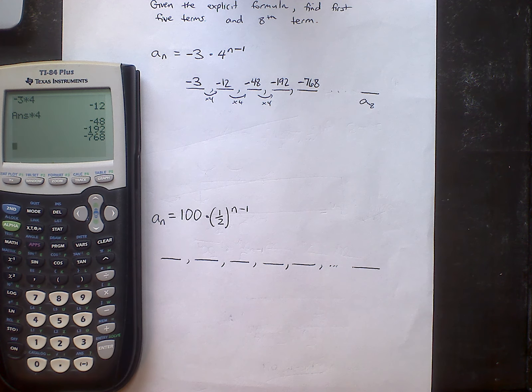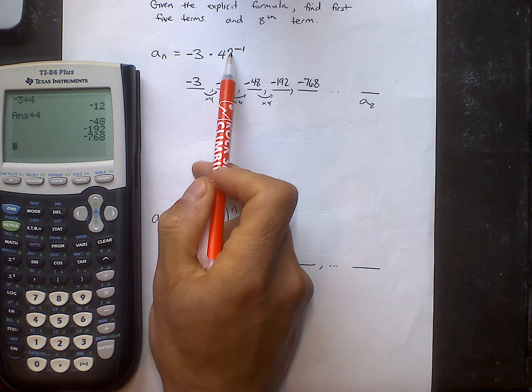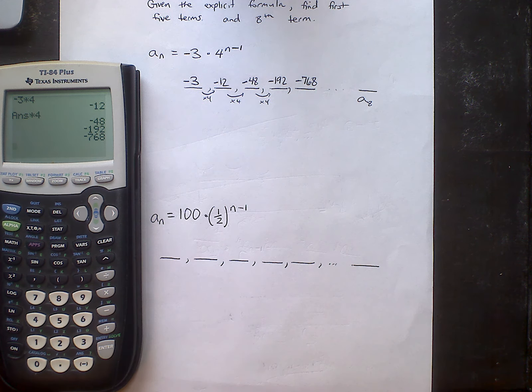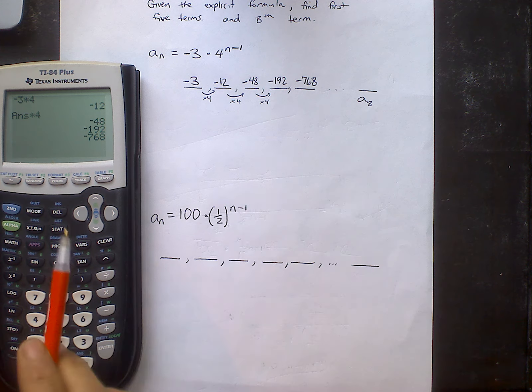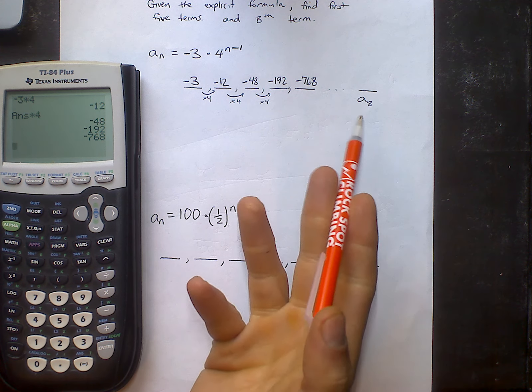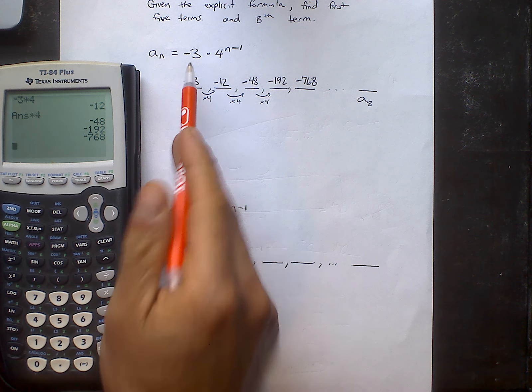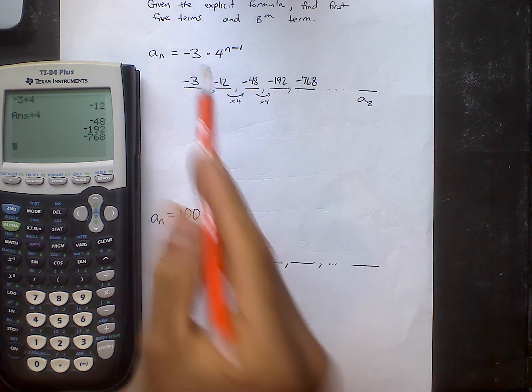You might notice that this is very similar to exponential growth, as you can tell that the explicit formula does have an exponent. Okay, if I want to jump to the 8th term, you could do this two ways. You could simply just continue to multiply by 4 until you get to the 8th term, or you can use the explicit formula.